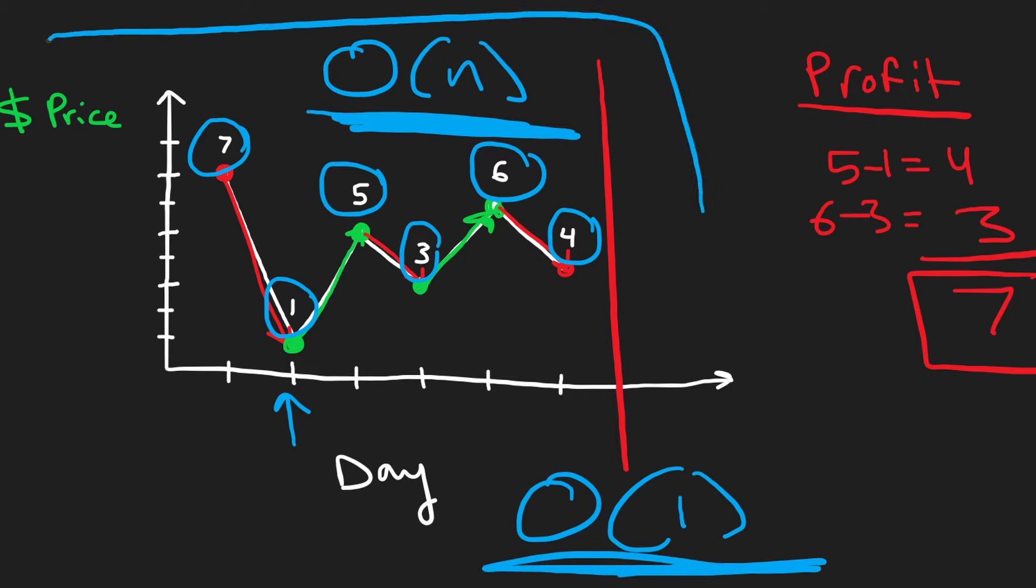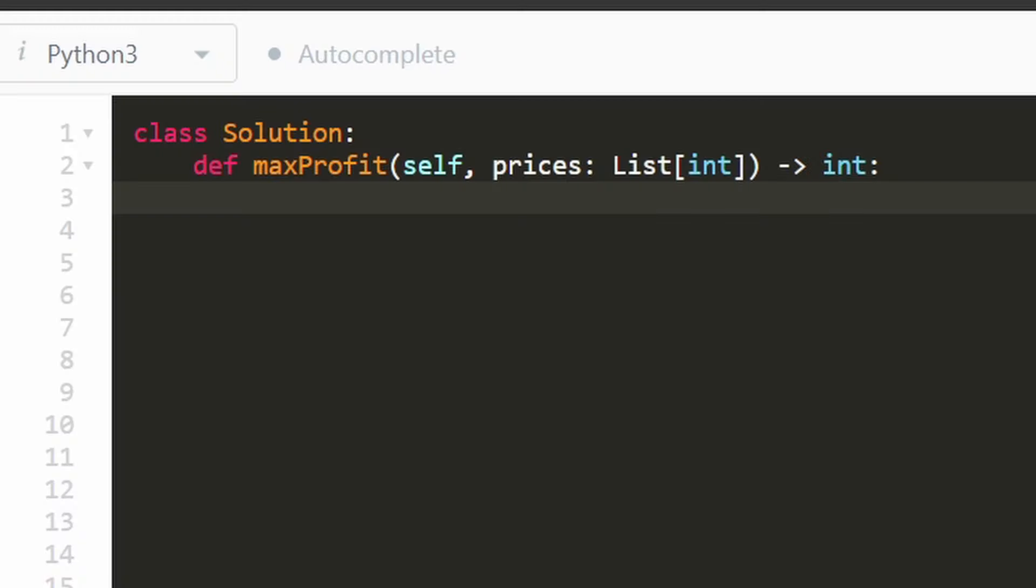And you can even use this algorithm in real life if you want to make some money. Actually, don't do that because you'll probably lose all your money unless you're investing in Dogecoin. But with that being said, let's jump into the code now. It's pretty short. So we are going to have a single variable to maintain the current profit, the total profit we have so far. It's initially going to be zero.